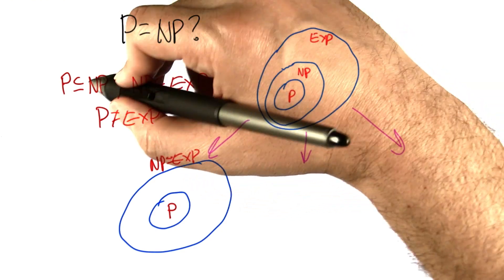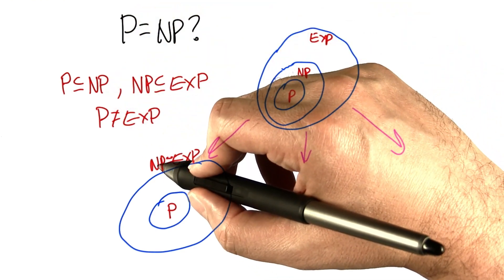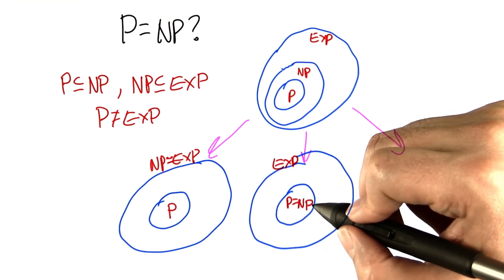So, we know those two things are different, but we don't really know. It could be that NP is equal to EXP. It could also be that P is equal to NP.